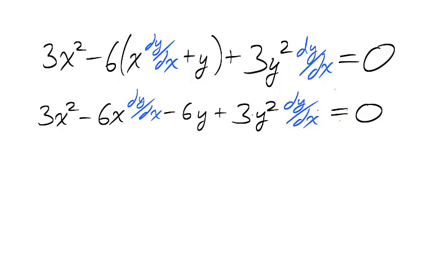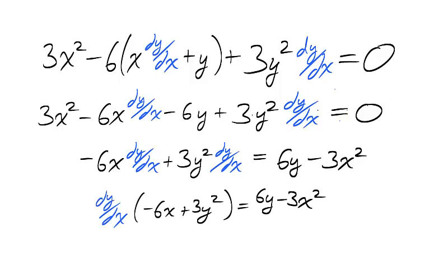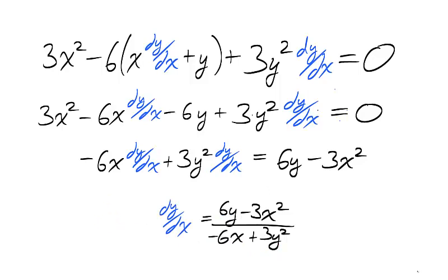Begin by distributing negative 6. Then, isolate on the left the terms that have dy dx in them. Factor dy dx. And then divide the factors which do not have dy dx in them to the right side. And we obtain an explicit function describing dy dx.